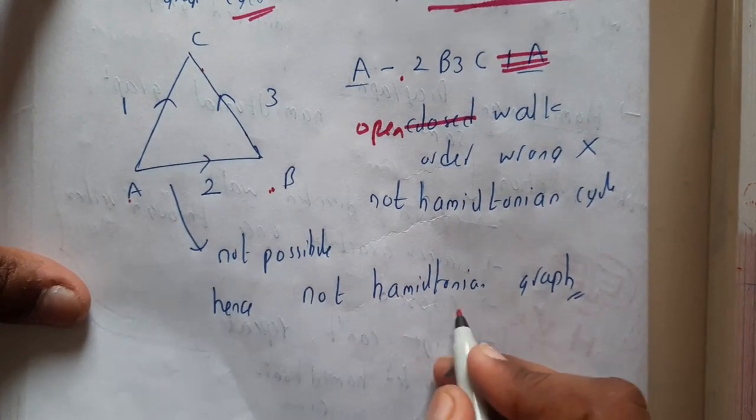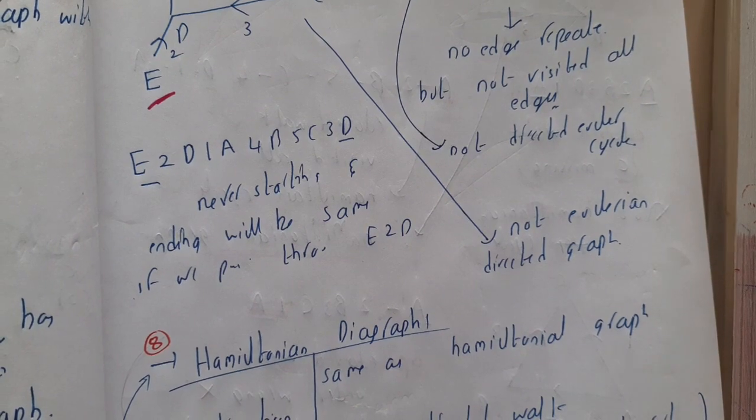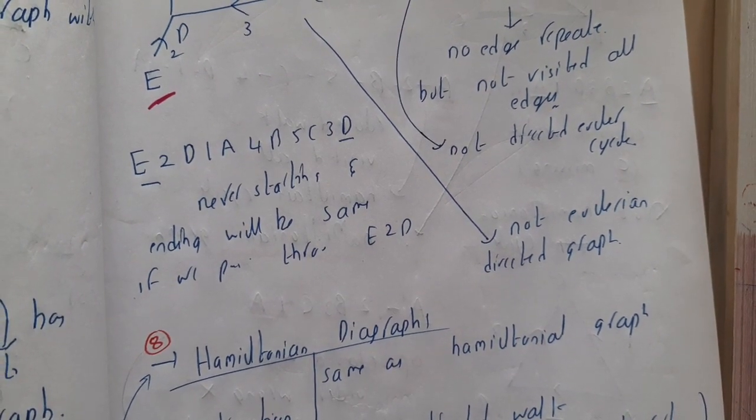I hope everyone got a clear idea. Basically, the thing you should remember in Hamiltonian is HV.